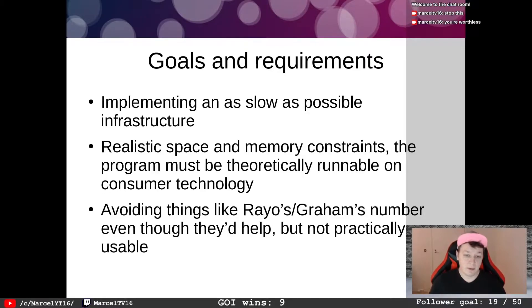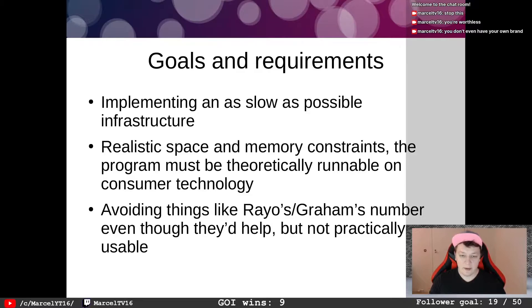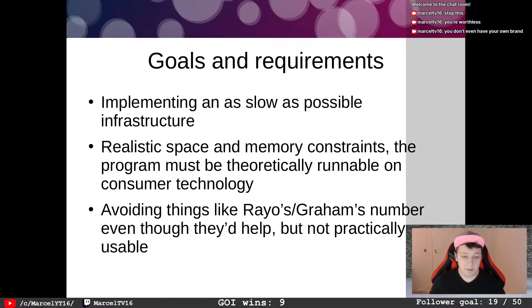The program must be theoretically runnable on consumer technology. It's easy to think of things like RAYO's or Graham's number because they're very big, but they're impractical because it's hard to implement these numbers — we don't have the space to implement them.